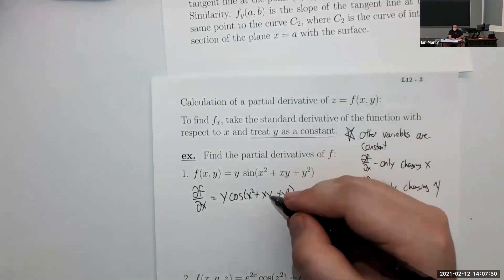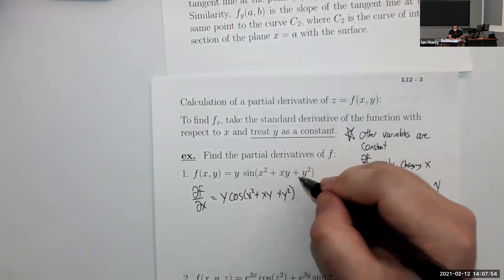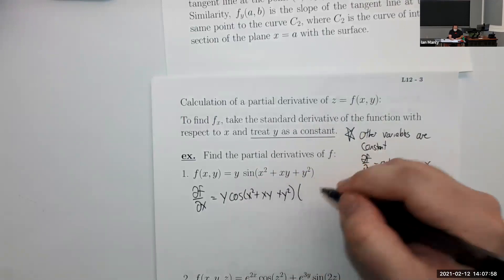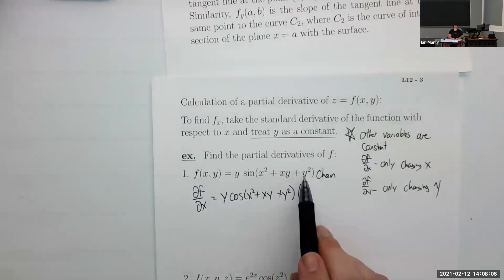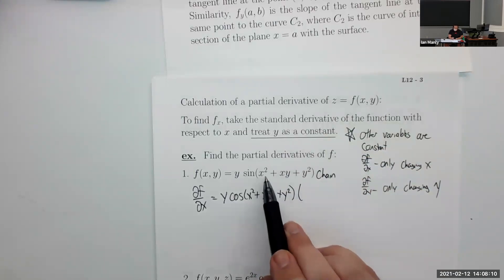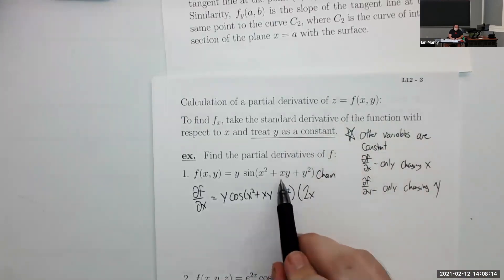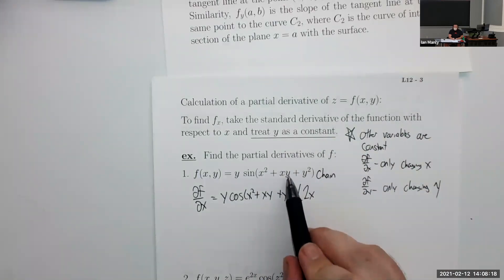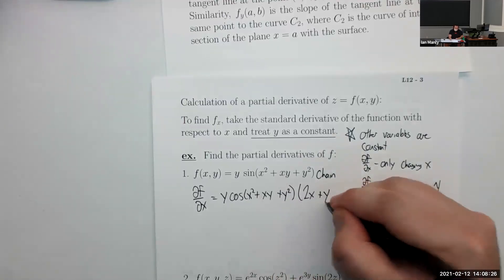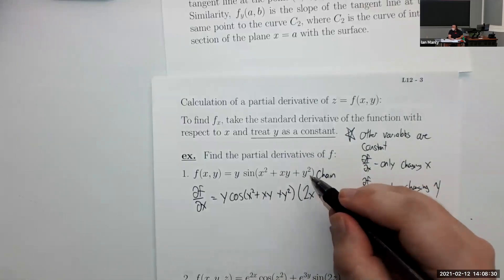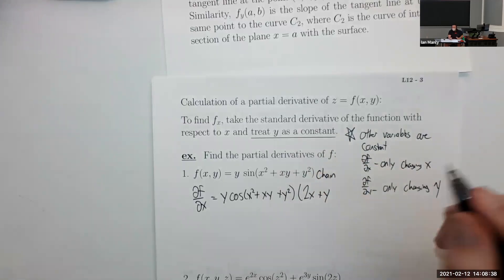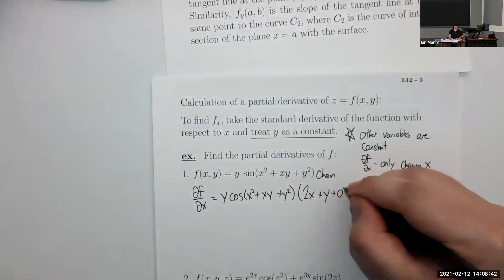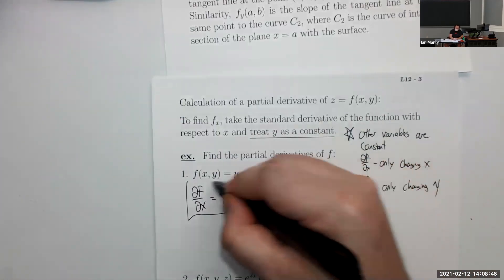Now we invoke the chain rule, since we did the derivative of something with a non-trivial inside. The derivative of x² is 2x. The derivative of xy with respect to x — imagine it as a constant times x, so the derivative is y. And the derivative of y² with respect to x is zero, because y² is just some constant. Anything involving only y's is going to be constant. So our partial derivative with respect to x is y·cos(x²+xy+y²)·(2x+y).